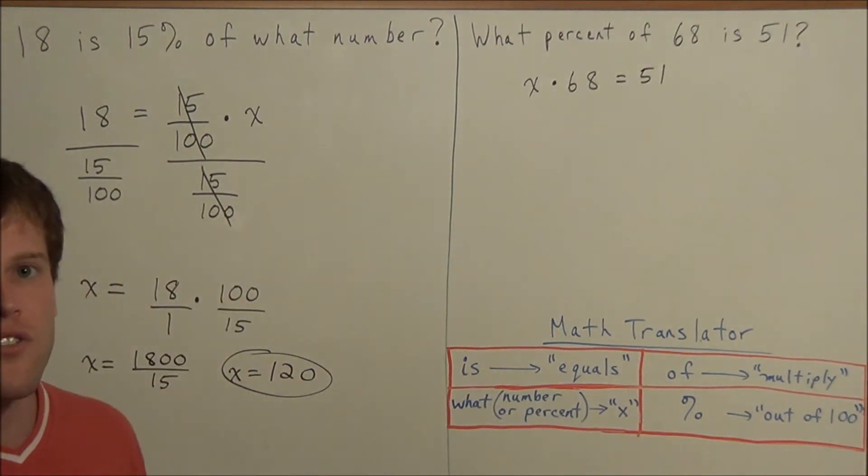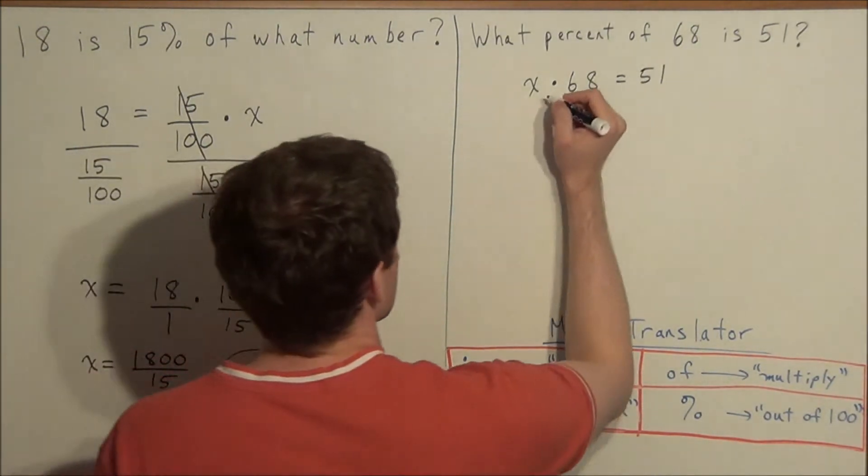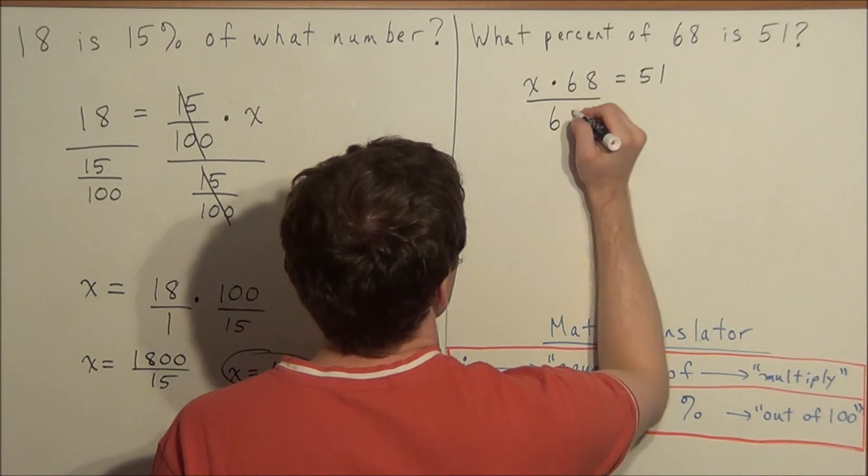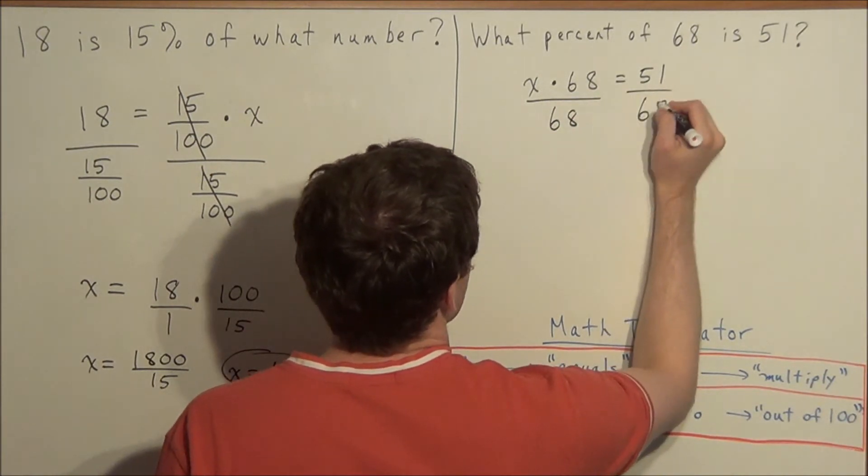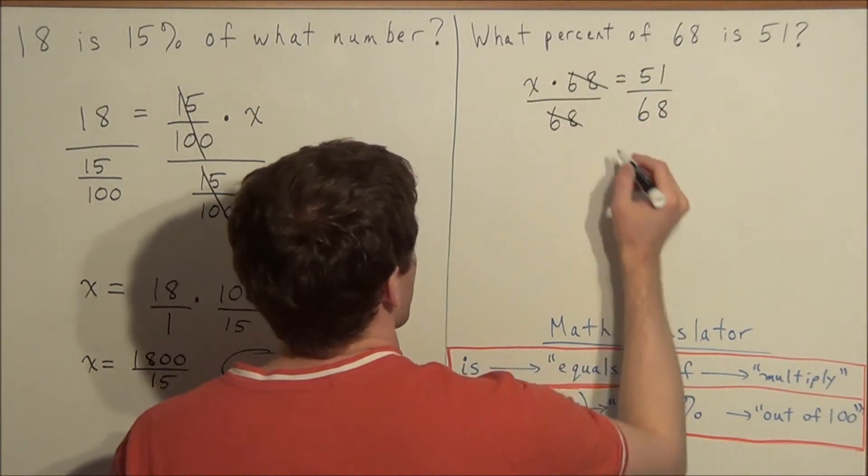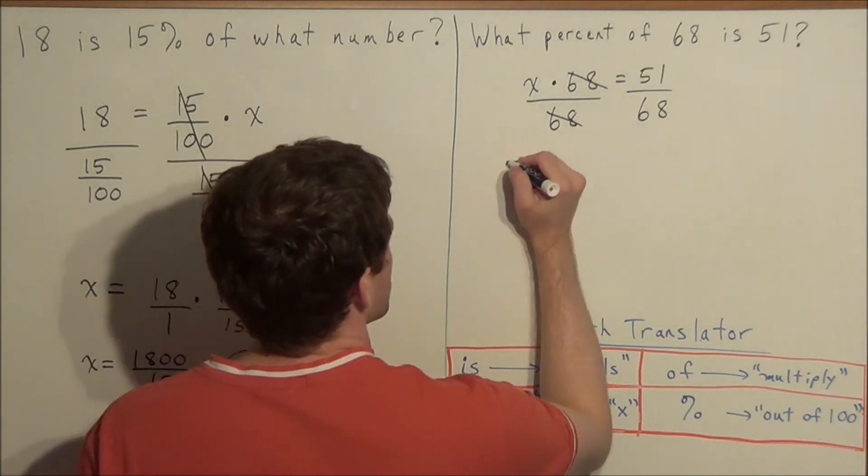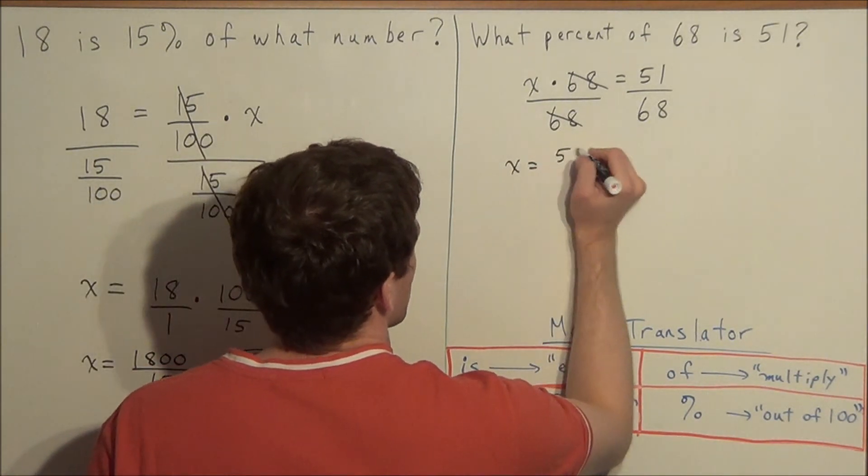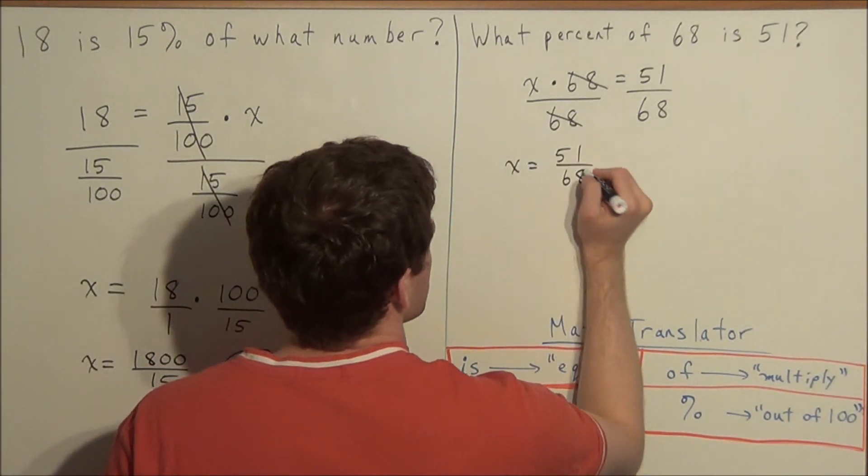So now to solve for x, all we need to do is divide both sides by 68. So now on the left hand side, 68 divided by 68 will cancel, and we have x is equal to 51 over 68.